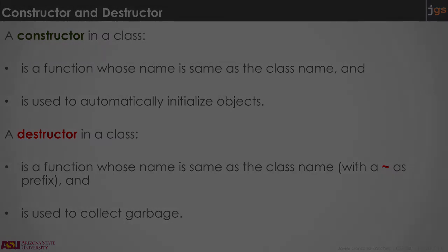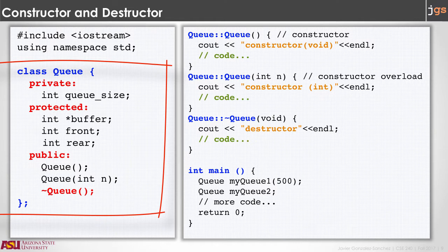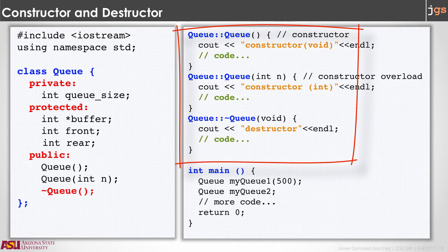This is the class Q and it has two constructors — one without parameters and one with one parameter — and it has a destructor. Notice that the two constructors have the same name as the class, and the destructor has the name of the class with the tilde as a prefix. The methods are being defined outside of the class, so we have the name of the method and the name of the class with the scope resolution operator in the middle. For the destructor, the name includes the tilde at the beginning.